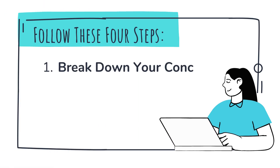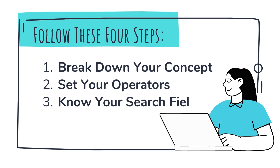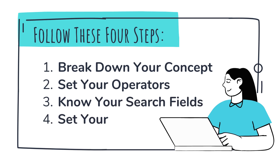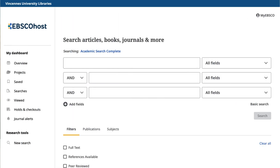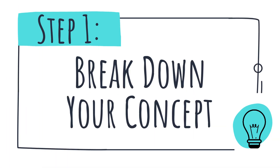The four steps are: break down your concept, set your operators, know your search fields, and set your filters. As you can see, the advanced search has multiple search boxes, which leads us to step one: break down your concept.